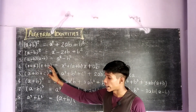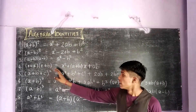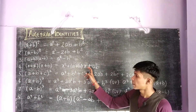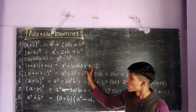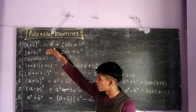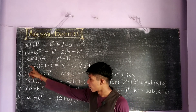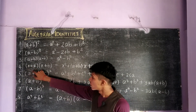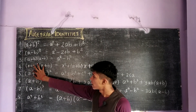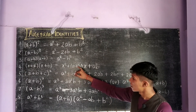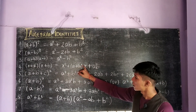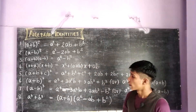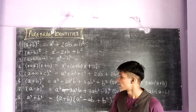The fourth identity which we are going to see now is x plus a into x plus b, which equals x square plus a plus b into x plus ab. Similarly, as with the third identity, when we multiply these individual terms we get x square plus ab plus a plus b into x plus ab.